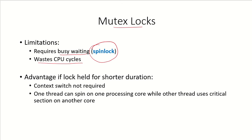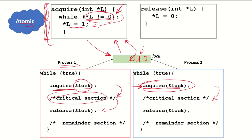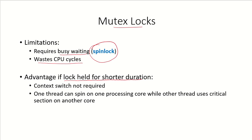Mutex locks are advantageous to use if the lock is to be held for a very short duration. If the critical section is very small — for example, only incrementing or decrementing a variable — mutex locks are advantageous because then a context switch is not required; the waiting process can spin for a few cycles until the lock is released. Also, on a multi-core system, one process can keep spinning on one processing core while the other thread uses the critical section on another core, and as soon as the lock is released the spinning thread can acquire it.